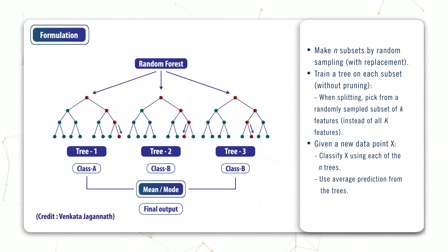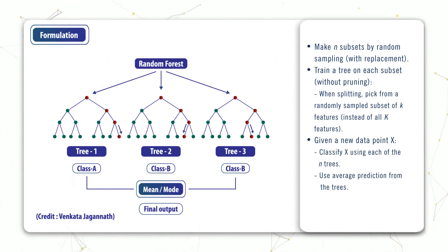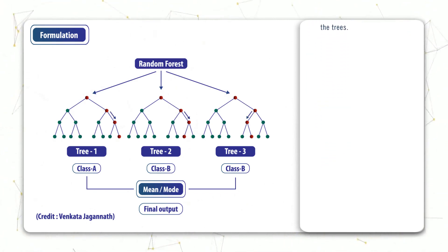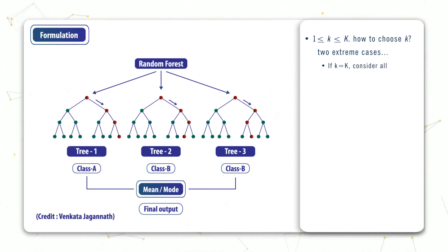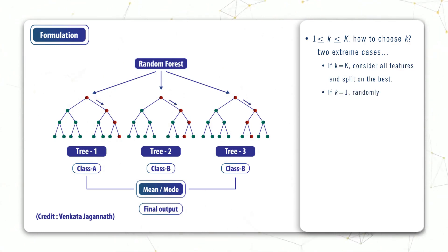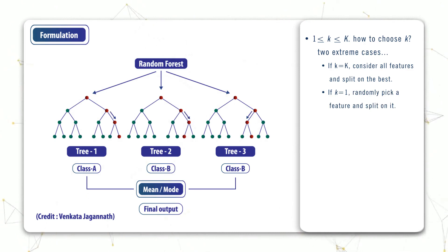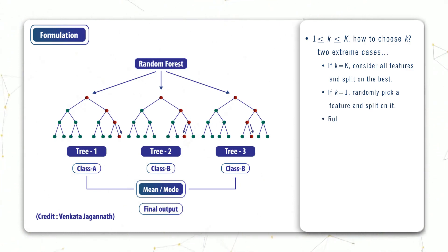Now let's look at a few subtleties. The first is: how large a subset of potential features do we consider at each split? Let capital K be the total number of features in our dataset, and let small k be the number of potential features we consider splitting on. If small k equals capital K, it's as if we weren't even randomly sampling, so small k can't be too large. On the other hand, if small k equals 1, it's as if we are just splitting randomly, so k can't be too small either. The best choice for small k has to be somewhere between these two extremes. It turns out that for classifiers, a good rule of thumb is to pick small k as the square root of the total number of features.